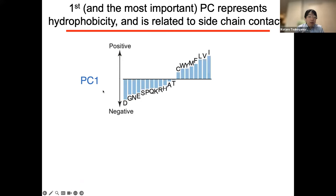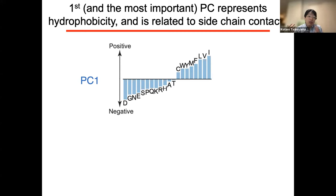I'd like to talk about PC1, which is the most important principal component. The advantage of PCA is that we can quantify the contribution of the 20 amino acids to each PC. In this case, isoleucine, valine, and leucine show positive values. On the other hand, aspartate, glycine, and aspartate show negative values. From this result, we could see that PC1 should represent the preference for hydrophobicity. We also investigated what kind of environmental factors are related to this PC1. Indeed, we could see a very nice correlation between PC1 and the number of side-chain contacts. In the structure, residues at the core region show positive values, while residues on the surface show negative values. So PC1 basically represents the preference for hydrophobic amino acids, highly related to the number of side-chain contacts.